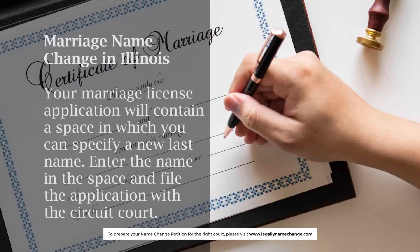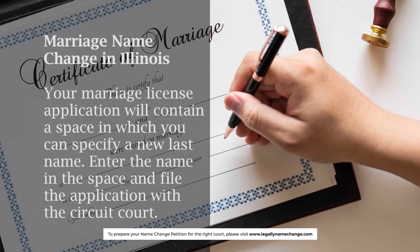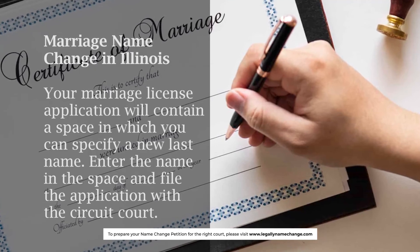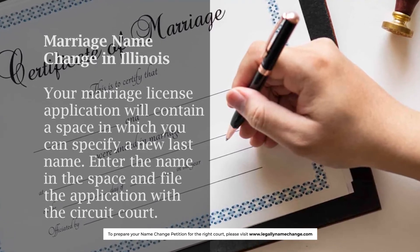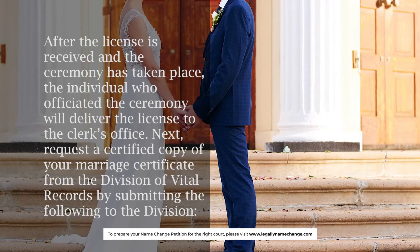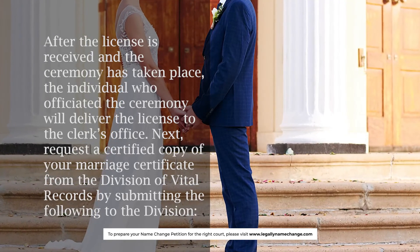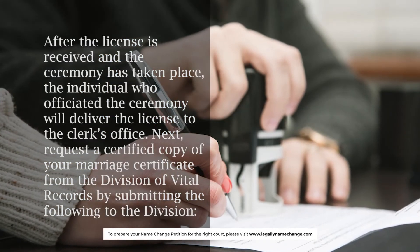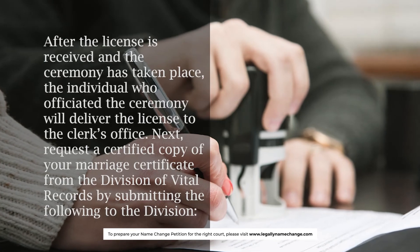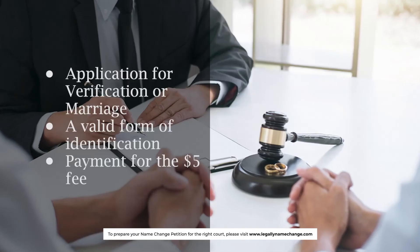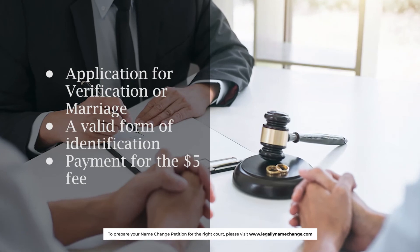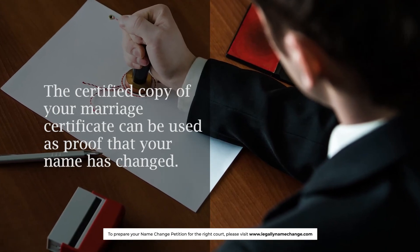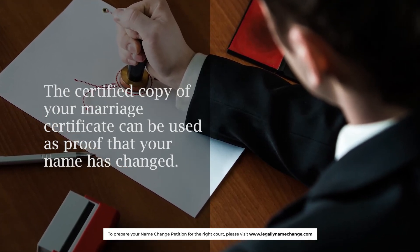Marriage name change in Illinois: your marriage license application will contain a space in which you can specify a new last name. Enter the name in the space and file the application with the circuit court. After the license is received and the ceremony has taken place, the officiant will deliver the license to the clerk's office. Next, request a certified copy of your marriage certificate from the Division of Vital Records by submitting: an Application for Verification of Marriage, a valid form of identification, and payment of the $5 fee. The certified copy of your marriage certificate can be used as proof that your name has changed.